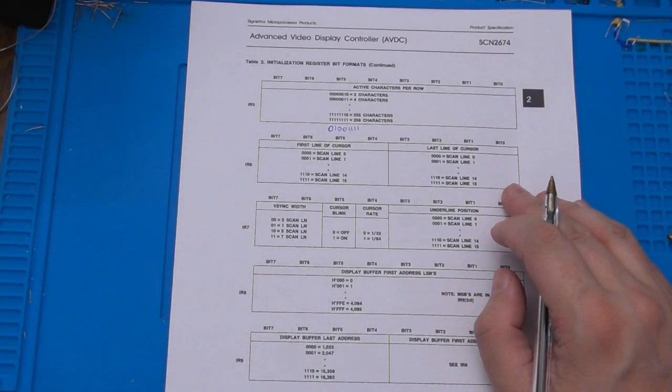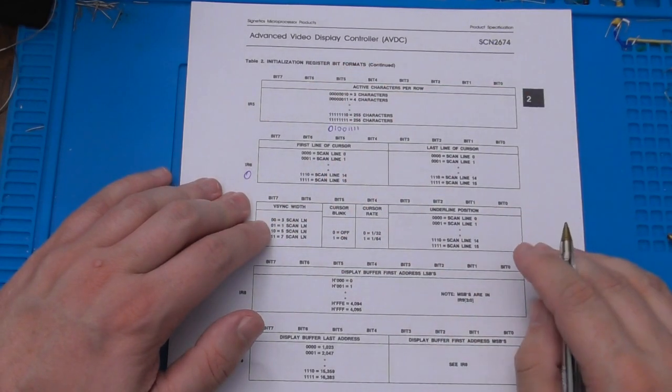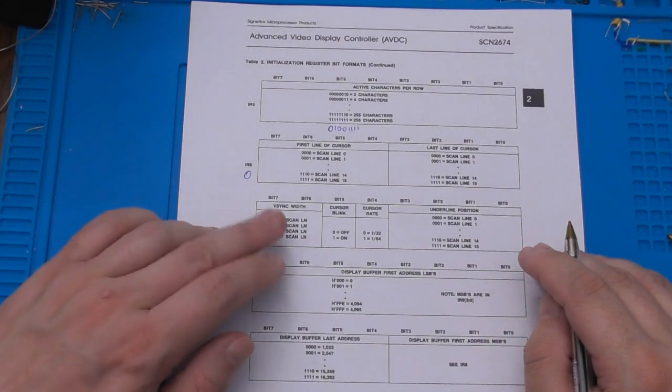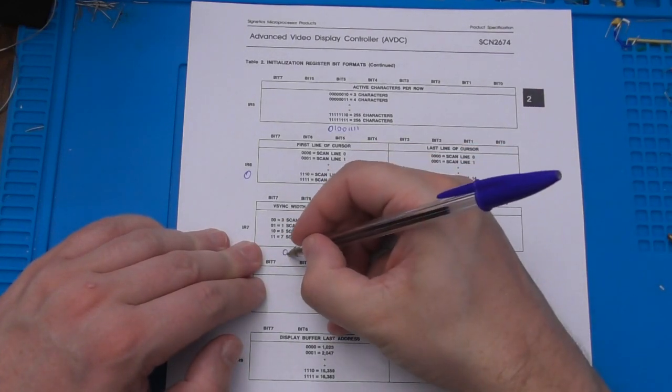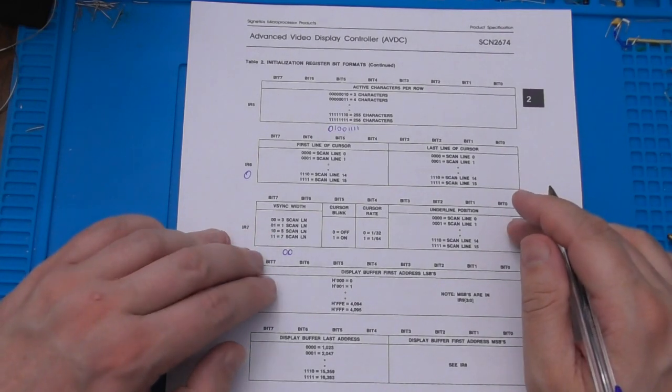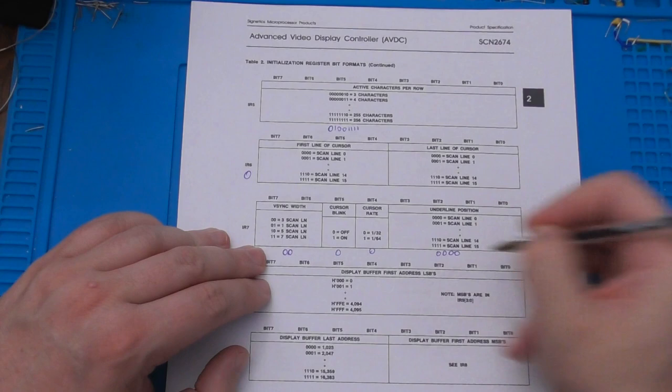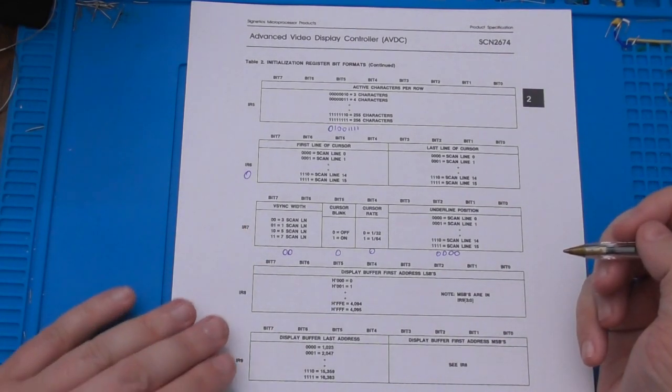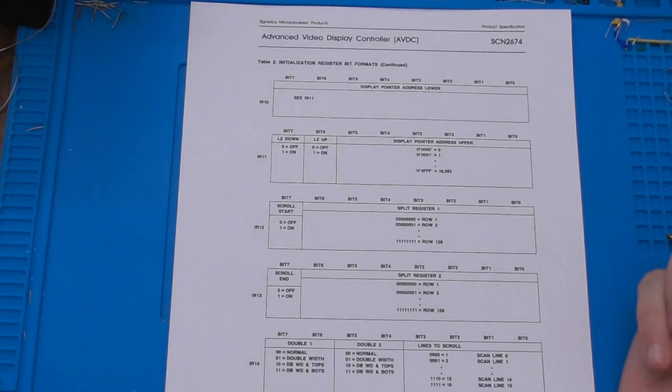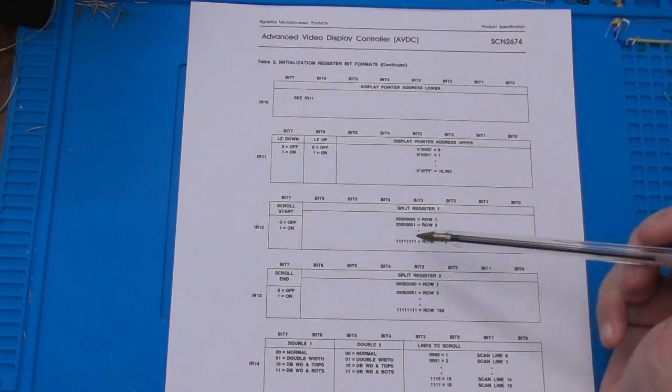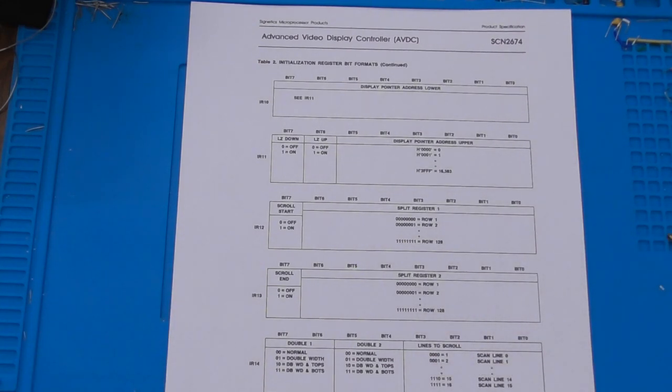Initialization Register 5 defines the number of characters per row. I think the value I'm going to use is 79. Remember I need to subtract one for the front porch change. Initialization Register 6 looks like it's all related to the cursor, so I don't care about that, I'm just going to use 0. Initialization Register 7, the VSync width is important. I'm going to use 3 scanlines for the VSync width instead of 2. The cursor blink, cursor rate, and underline position are all text mode only. The remaining registers are only important for things like hardware scrolling, split screens, and things like that. So I'm just going to leave those as 0.